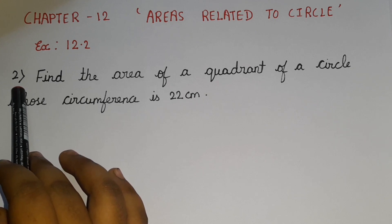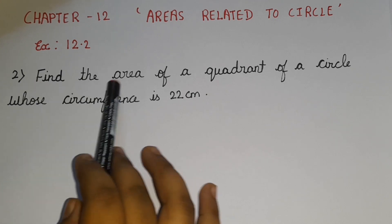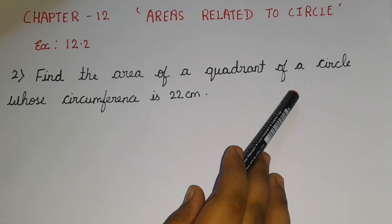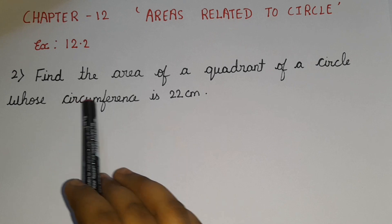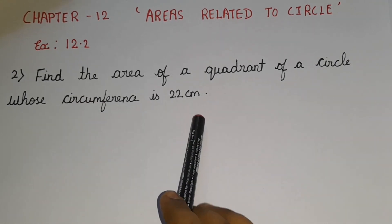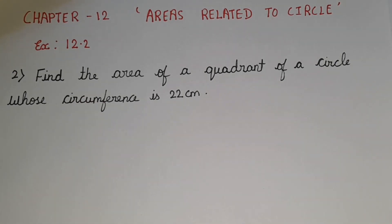Now let's read the question. Find the area of a quadrant of a circle whose circumference is 22 centimetres. So this is the question.